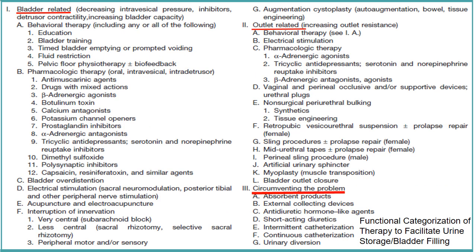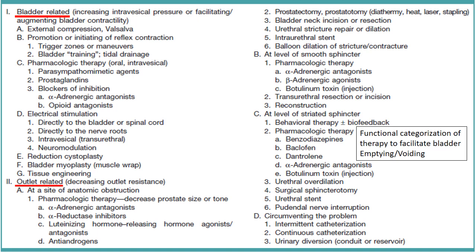The functional categorization of therapy to facilitate urine storage or bladder filling can be bladder-related or outlet-related, using behavior therapy, pharmacological therapy, pharmacological stimulation, or surgery. A parallel categorization covers therapy to facilitate bladder emptying or voiding, using external compression, pharmacological therapy, electrical stimulation, and surgeries.